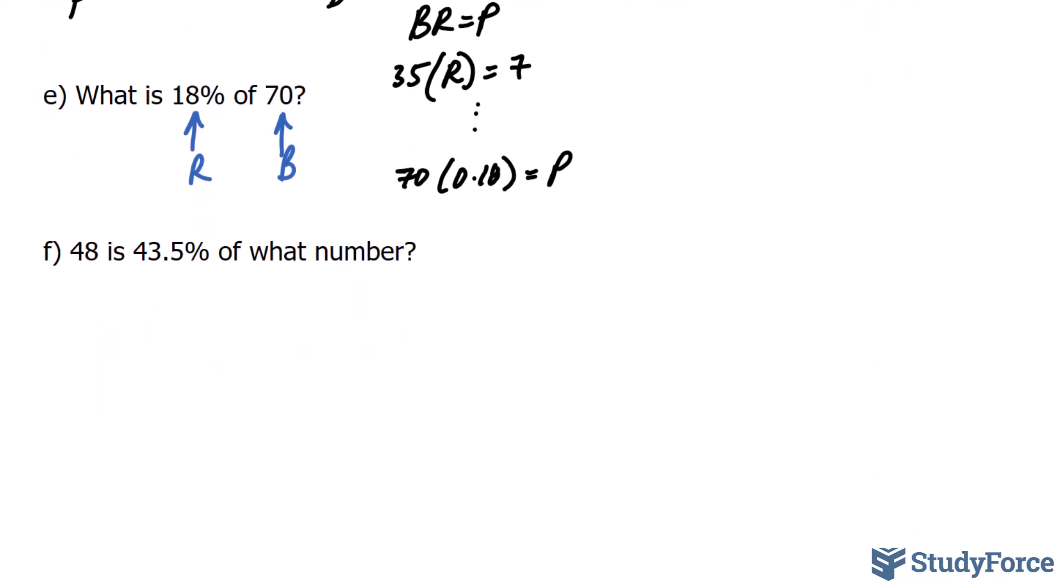And for the last question, we've been given a percentage again. So that's your R. The what number that we're looking for is your base value. And that is your portion. So the way you would set it up is like this. You would say B times 0.435 equals 48. You divide both sides by that factor and you would end up getting your B value.